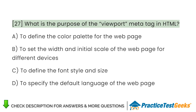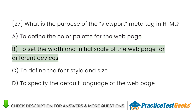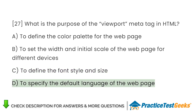What is the purpose of the viewport meta tag in HTML? A. To define the color palette for the web page. B. To set the width and initial scale of the web page for different devices. C. To define the font style and size. D. To specify the default language of the web page.